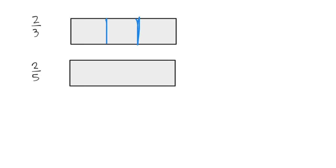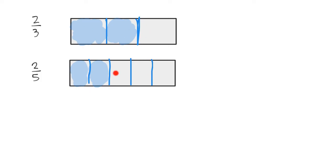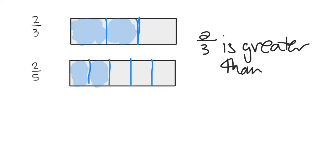To show 2/3, I'm going to cut this into 3 equal-sized pieces and shade in 2 of them, because that's what 2/3 means. There is my 2/3. Now down here I'm going to cut it into 5ths because the denominator is 5, and shade in 2 of them — 1, 2, 3, 4, 5 pieces, shading in 2 because my numerator is 2. I can see that 2/3 is definitely more than 2/5. 2/3 is greater than 2/5.